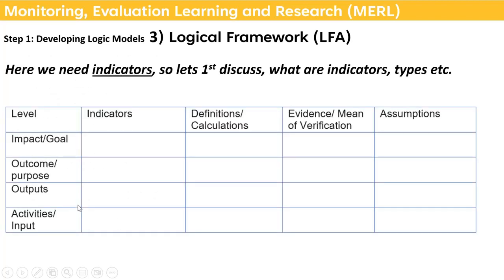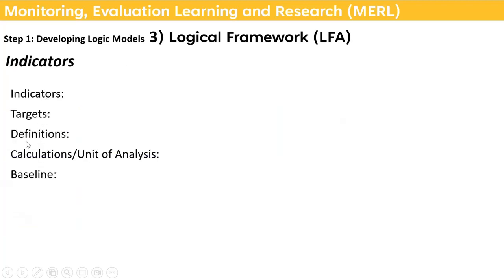For the logical framework we need indicators. In this session we will first discuss what indicators are, their types, and how to develop a logical framework. We will develop indicators for different levels, then definitions, evidence, means of verification, and assumptions. Five key words to understand: indicators, targets, definitions, calculations and unit of analysis, and baselines.